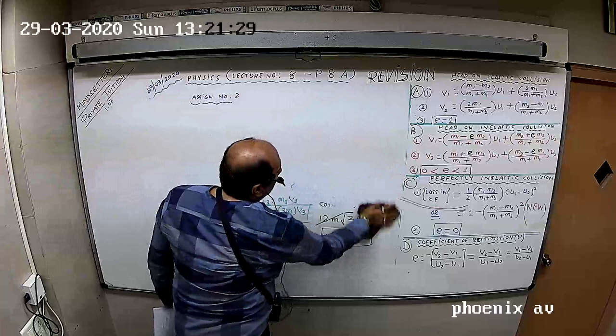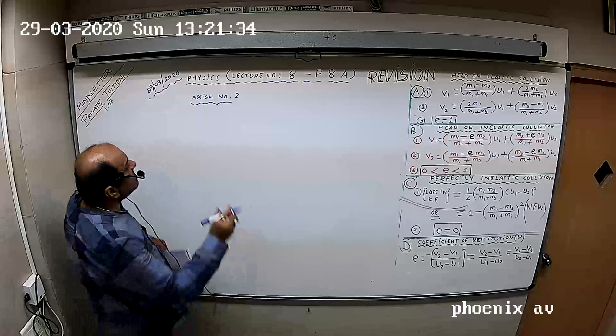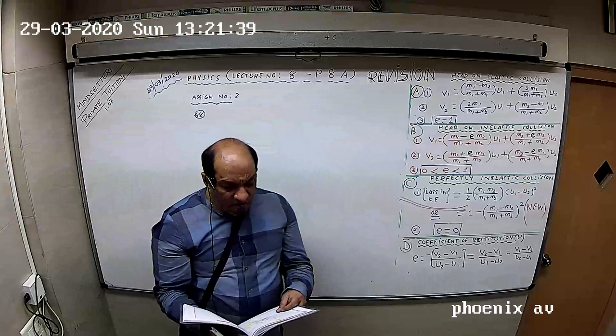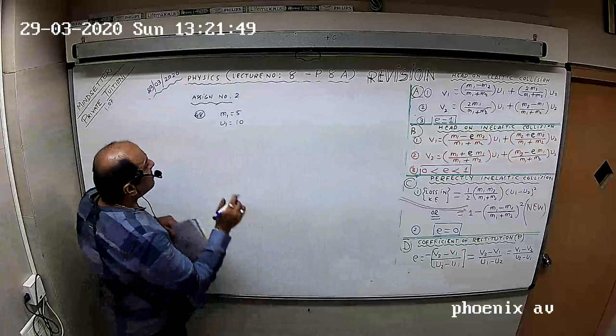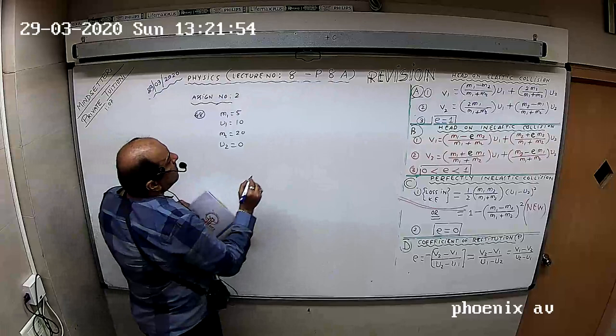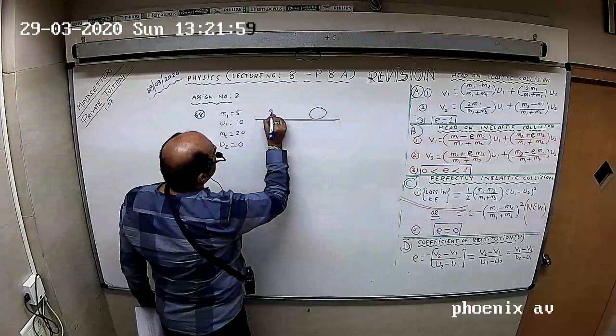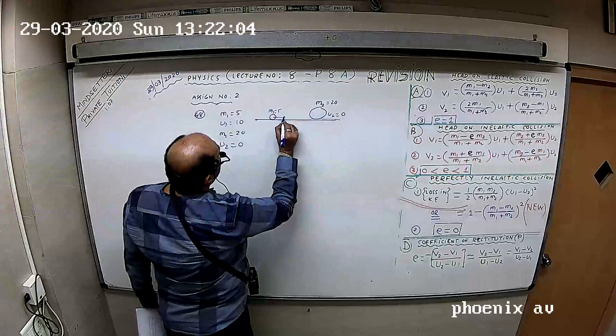Question number 48 now. A body of mass 5 kg is moving with velocity 10 meters per second, collides with another body of mass 20 kg which is at rest. This is a small body, 5 kg, this is a big body, 20 kg. This initial velocity is zero, this initial velocity is 10.